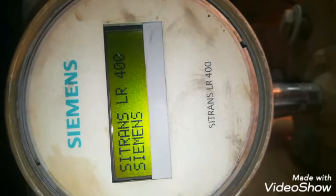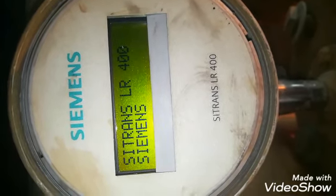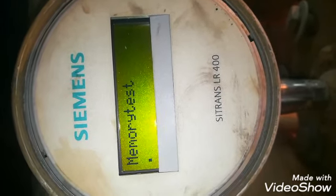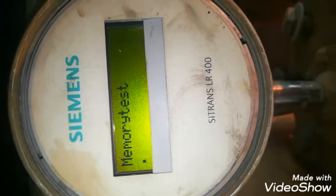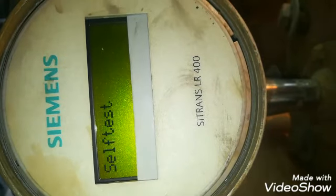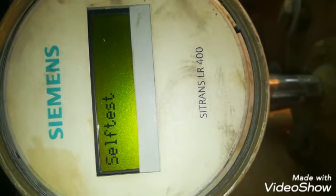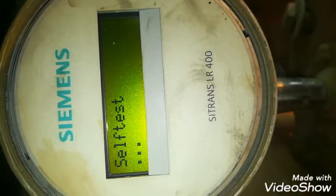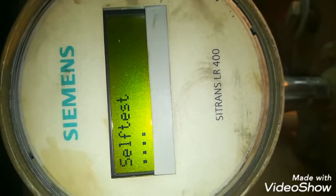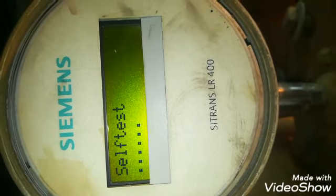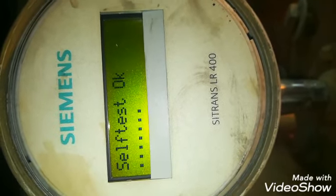So at the start it will display like this. It will show its model number, then it will test its memory, that its memory is OK. All the parameters are safe. It will run the memory test, then it will run the self test. In self test it will check the horn and the connection, all the electronics are OK, parameters are OK, memory is OK. So if all is OK, then it will show the normal display.